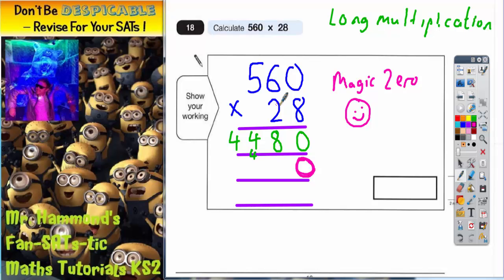We're going to do 2 nothings, 2 sixes, 2 fives in that order. 2 nothings are nothing. 2 sixes are 12, put your 2 in, carry your 1. 2 fives are 10 plus that 1 is 11. So 560 times 20 is 11,200.